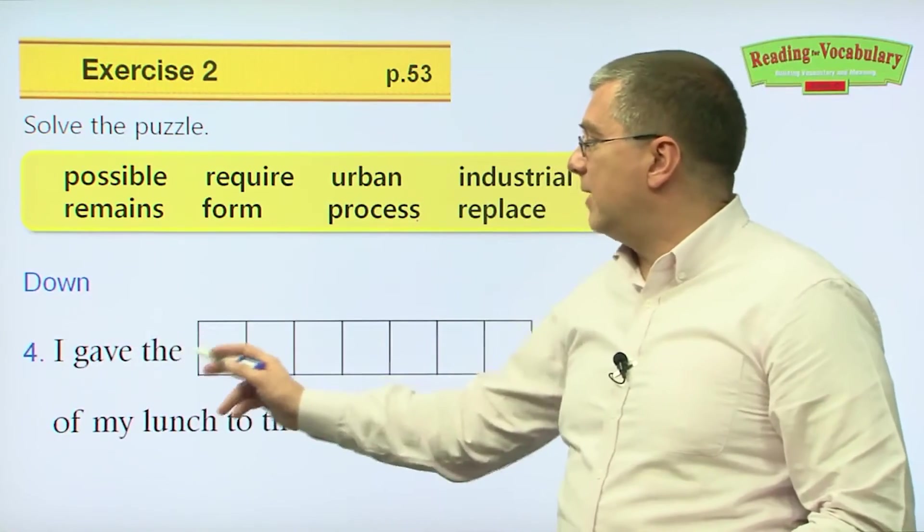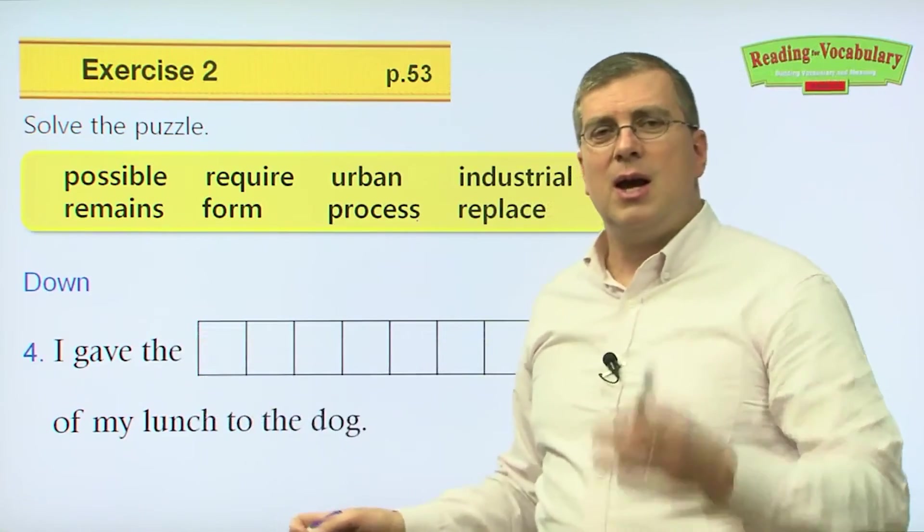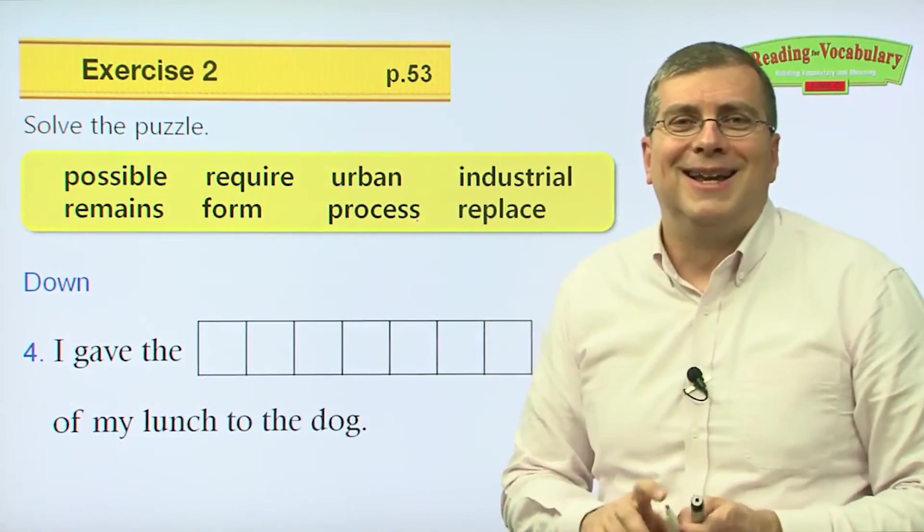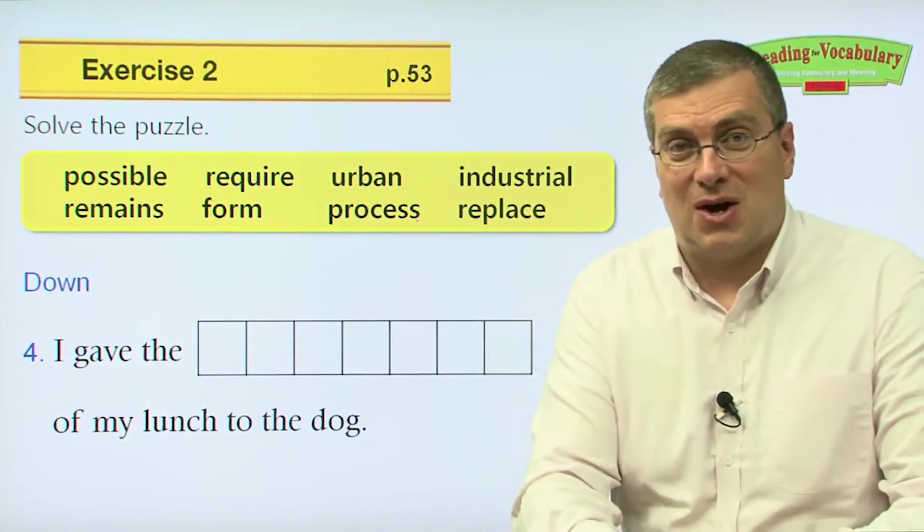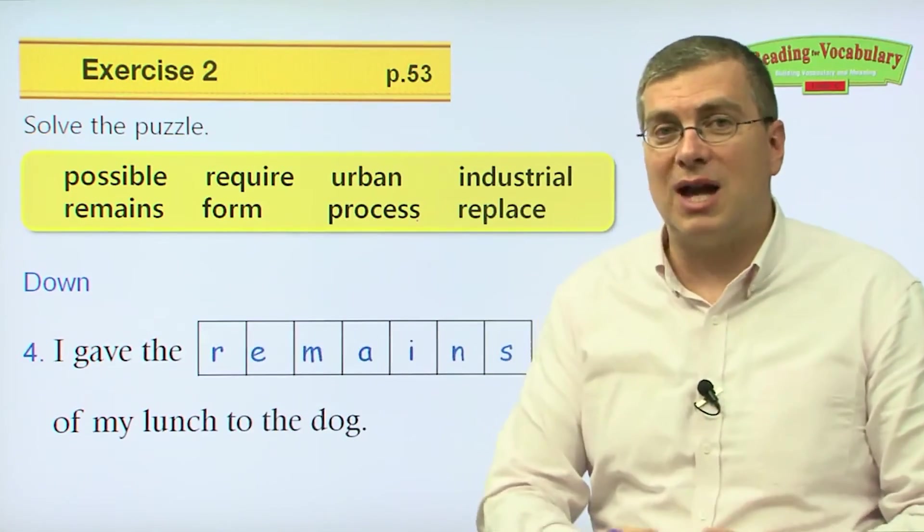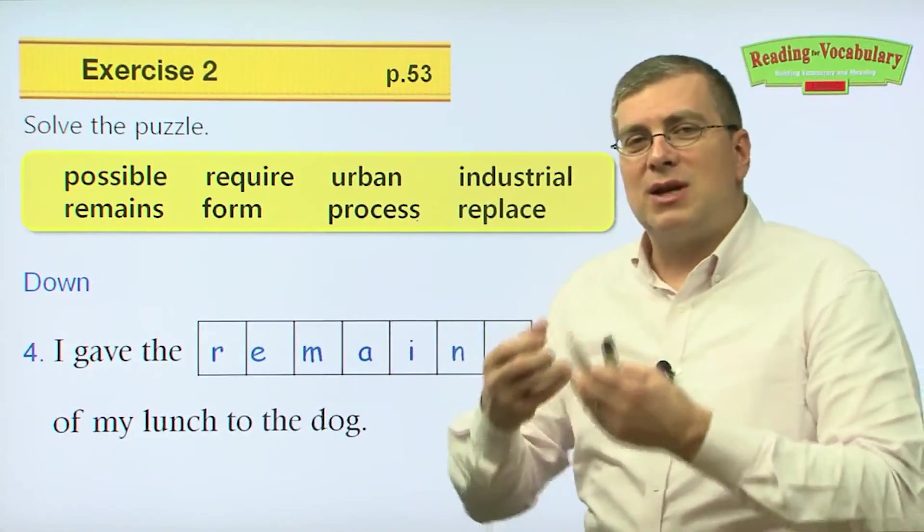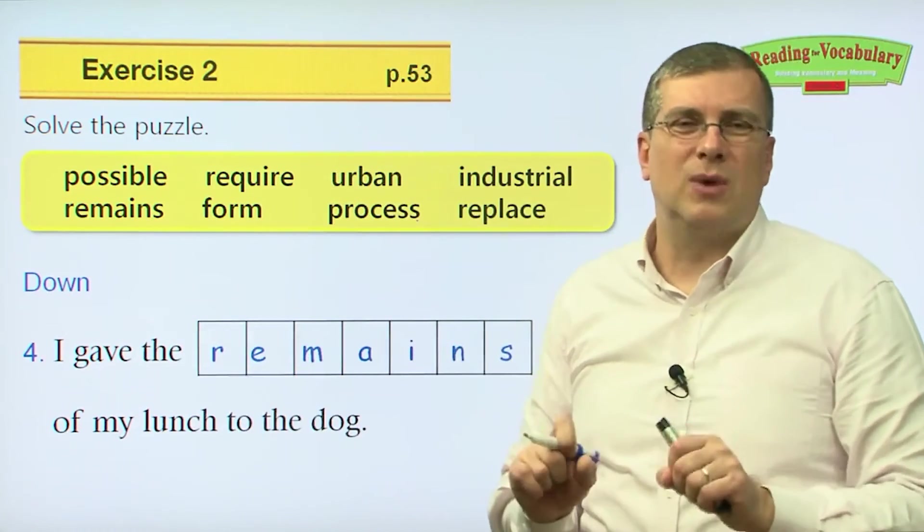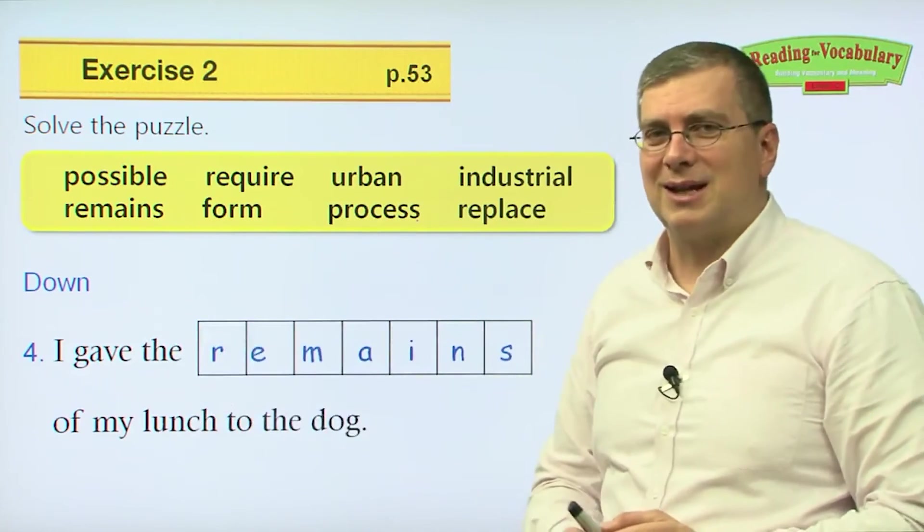Number four, I gave the something of my lunch to the dog. I gave the what of my lunch to the dog. Well, think about that. Do you have a dog? When you eat food, your dog looks at you like this. So after you finish eating, maybe you don't eat everything. So you give what's left to your dog. What is left is the what? It's the remains. You give the remains of your lunch. Maybe a piece of bread or maybe some rice or maybe a piece of apple. Dogs eat apples. So you give the remains of your lunch to your dog. But don't do that, actually, because your dog will beg you every time you eat. So it's not good to give the remains of your lunch or dinner to your dog. Give them their food separately.